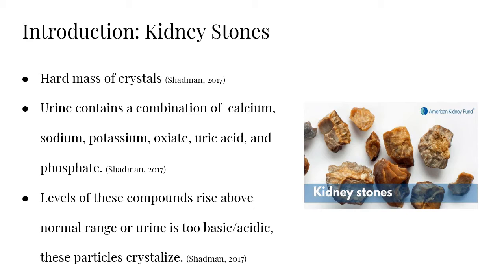A common disorder that many individuals deal with is kidney stones. Since the kidneys filter waste, there are cases of these particles forming clusters in the kidneys, ureters, bladder, or in the urethra. These particles become hard masses of crystals. Our urine contains a number of compounds such as calcium, sodium, potassium, oxide, uric acid, and phosphate. If these compounds become too high or acidic, the particles crystallize.